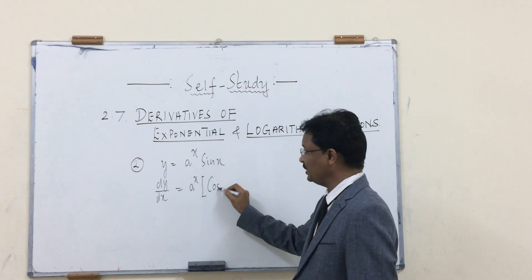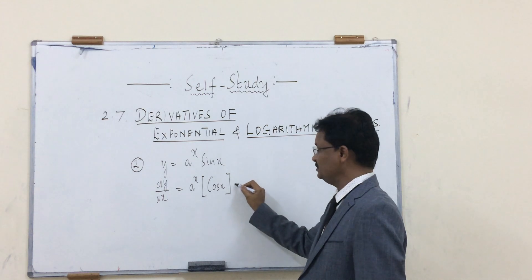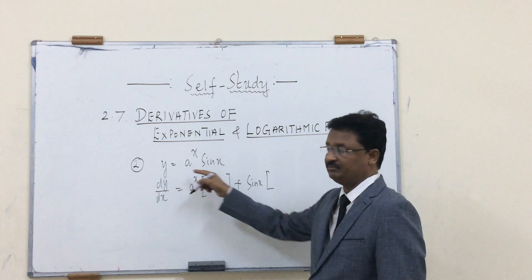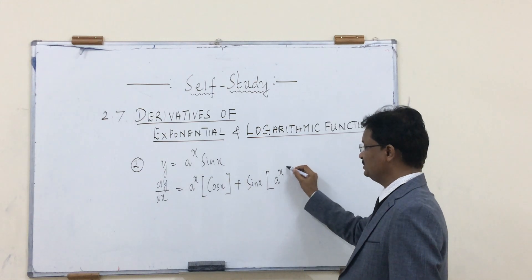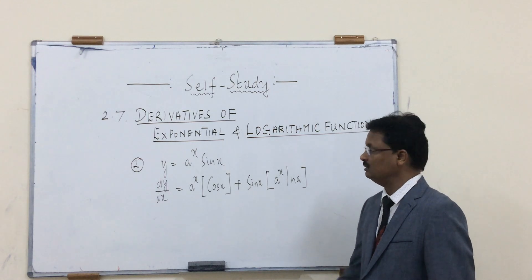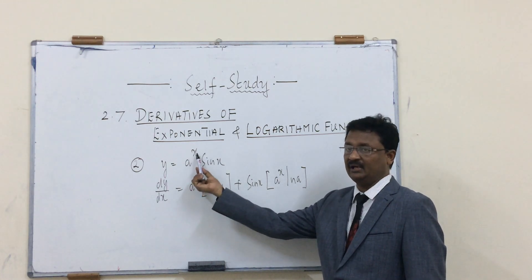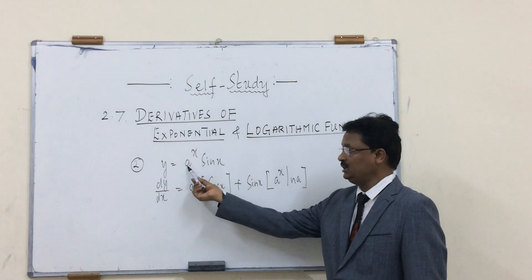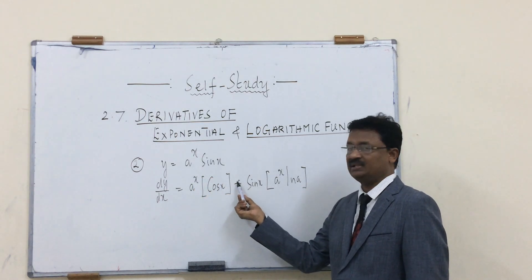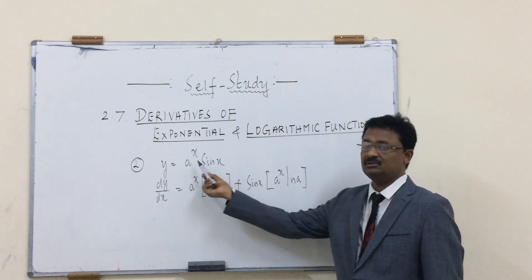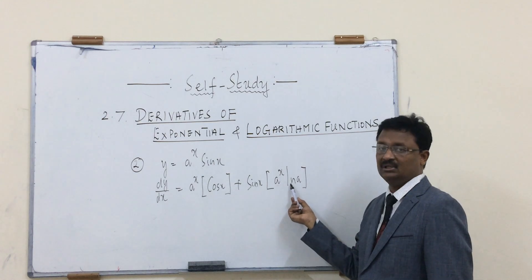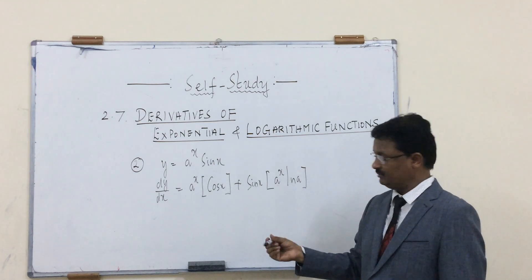Applying the product rule: a^x times the differentiation of sin(x), which is cos(x), plus sin(x) times the differentiation of a^x. The differentiation of a^x is a^x · ln(a). So the derivative of a^x · sin(x) is a^x · cos(x) plus sin(x) · a^x · ln(a).